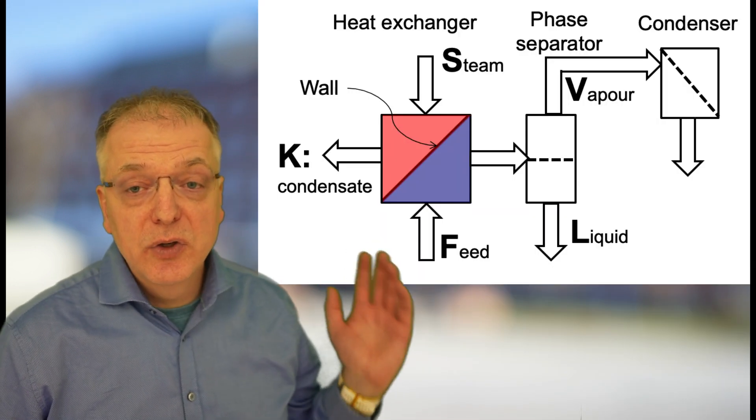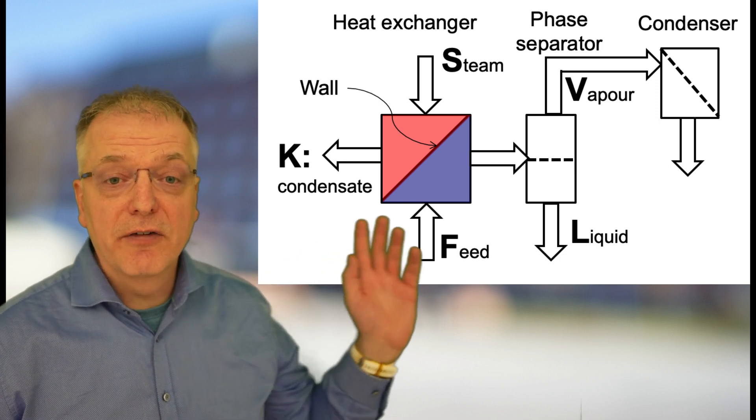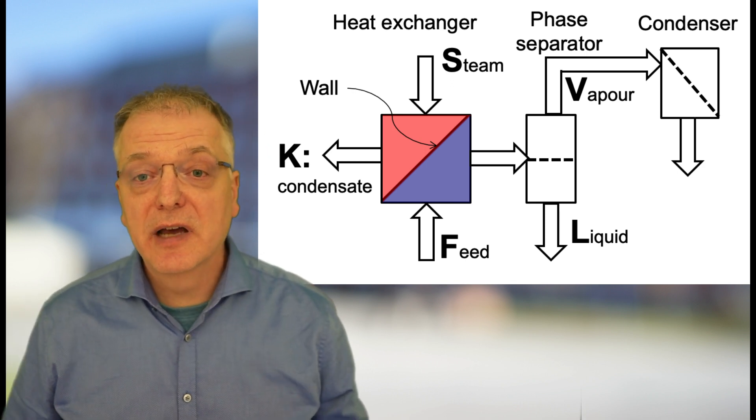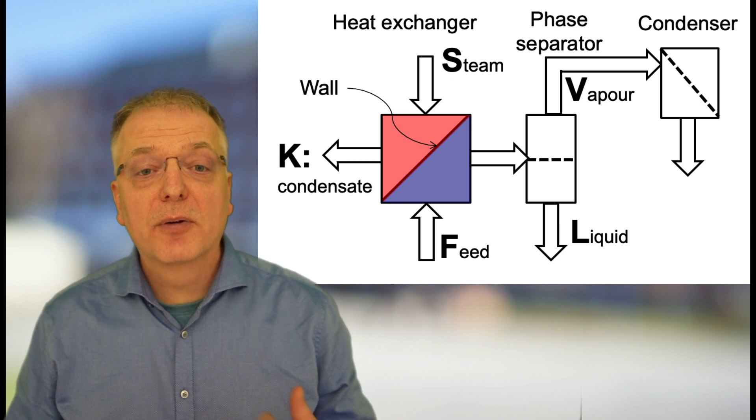An evaporator unit usually consists of three subunits: a heat exchanger, a phase separator and a condenser. The heat exchanger boils the feed F and the phase separator separates the vapor V from the liquid L.